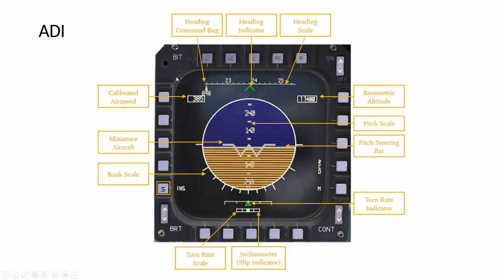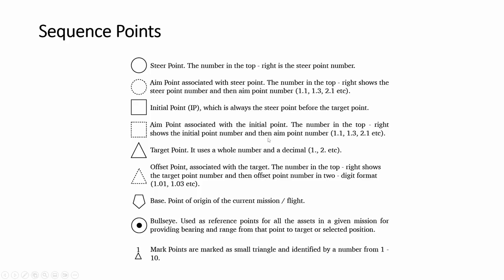The ADI doesn't show a steering queue as such, but shows your heading — for example 238 — and the command bug tells you the heading you should be flying toward. That command bug is shown here on the ADI.